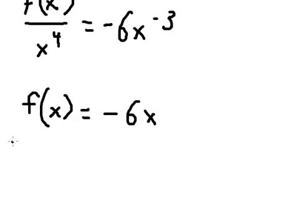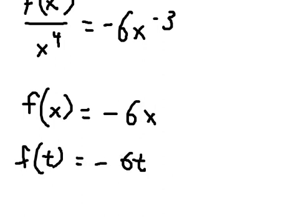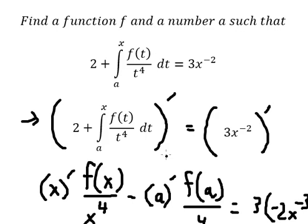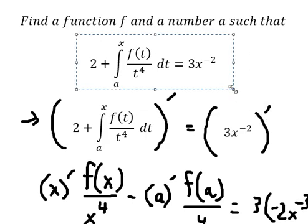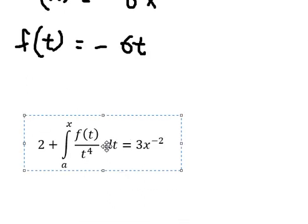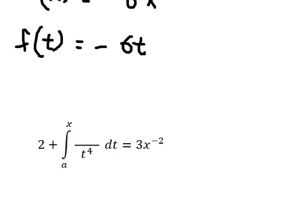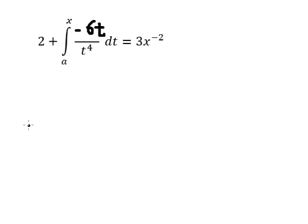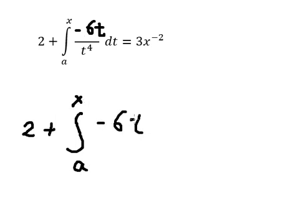They want to find f of t, so f of t should look like this. After we have this, we go back to this integration. We put f of t equal to the integral of negative 6t to the power of negative 3. We simplify this and get the expression shown.